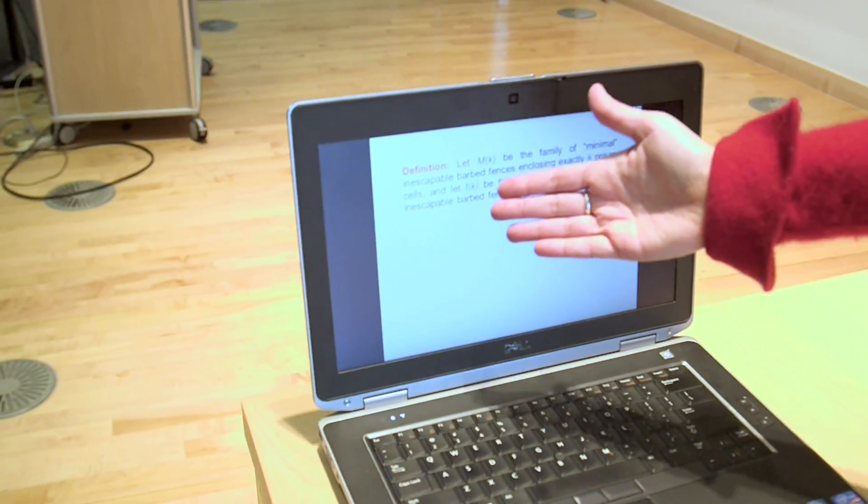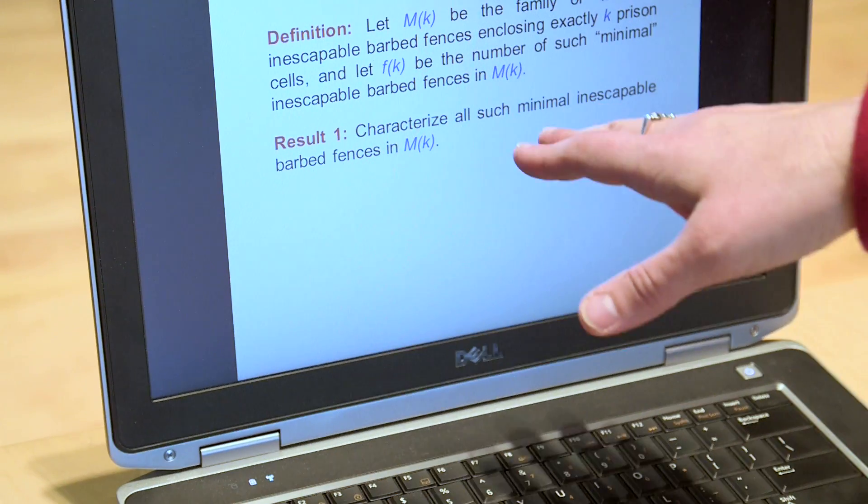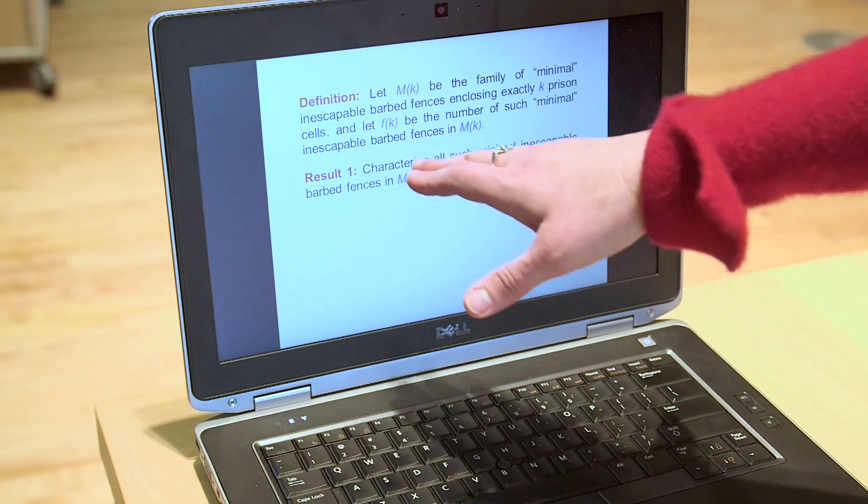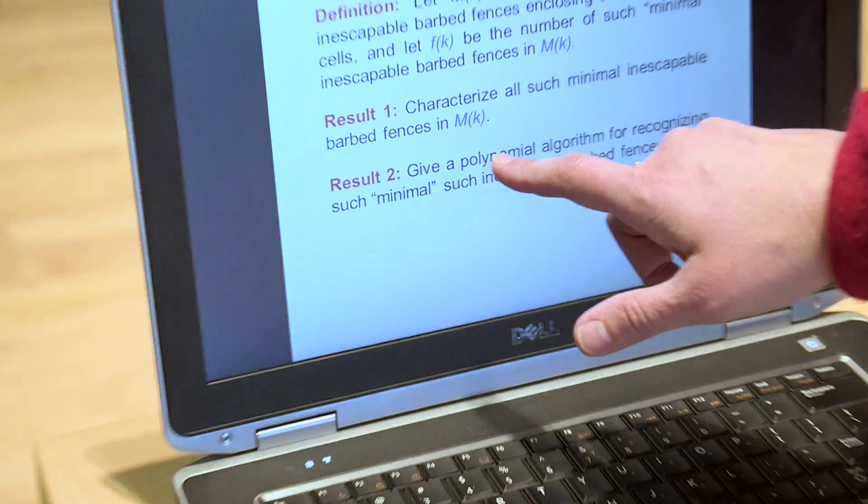So now you have two things, M of K and F of K. And so in their paper, they try to do several things. They try to characterize the minimal inescapable barbed fences. They try to calculate F of K, but that's relatively hard.